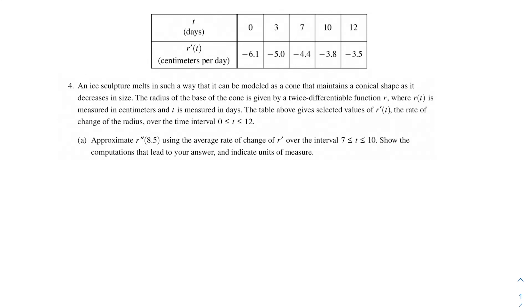In this video, we're going to be going over first response question number four, which says that an ice sculpture melts in such a way that it can be modeled as a cone that maintains a conical shape as it decreases in size. The radius of the base of the cone is given by a twice-differentiable function r, where r(t) is measured in centimeters and t is measured in days. The table above gives selected values of r'(t), the rate of change of the radius over the interval 0 ≤ t ≤ 12.